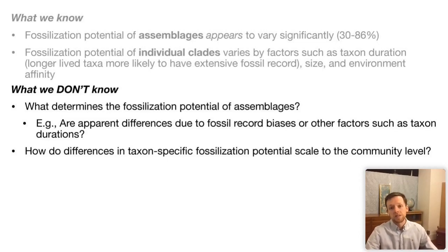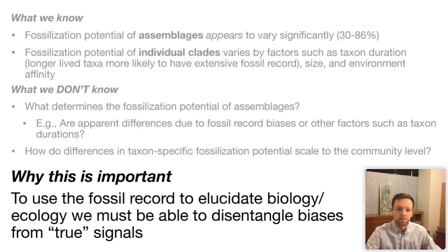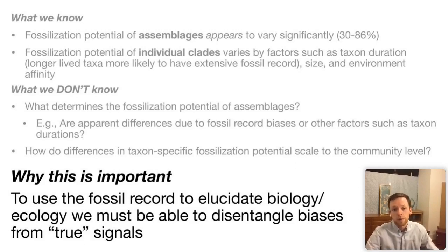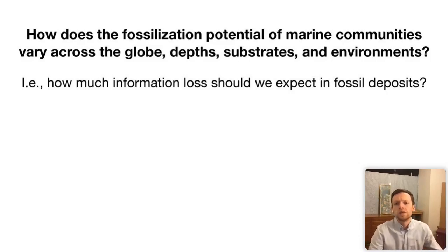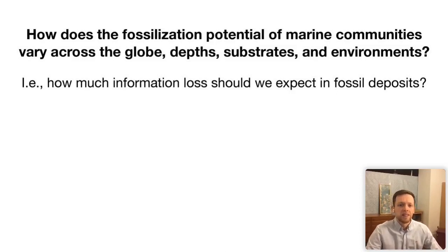Fossilization potential of assemblages appears to vary significantly. It varies for individual clades by taxon duration — longer-lived taxa more likely to have an extensive fossil record — as well as size and environmental affinity. What we lack is understanding of what actually determines the fossilization potential of assemblages, what causes variation in previously proposed values, whether variation is caused by differences in fossilization potential of organisms versus environments, or driven by things like taxon duration, and how taxon-specific differences scale up to communities.